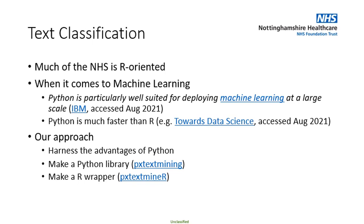Our approach is: we are R-oriented, but Python can offer something much better than R, especially in text classification. So let's make a Python library to make our solution available to Python people — it's open source licensed. But also, let's make an R wrapper called Pxtextminer that makes the pipeline available to R people as well.